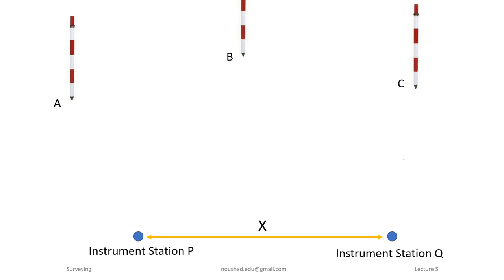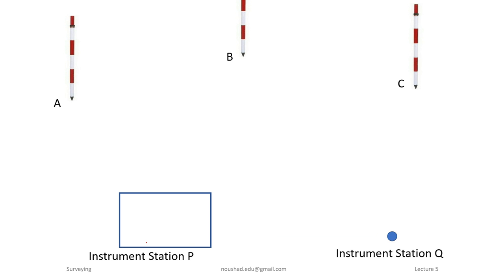In the field there are three points: A, B, and C, fixed using a ranging rod. The plot is made on the plane table. The instrument station is P and the observed point is Q. The distance between them is X — for example, 5 or 10 meters. The plane table is the drawing area. Points on paper are in small letters and ground points in capital letters.